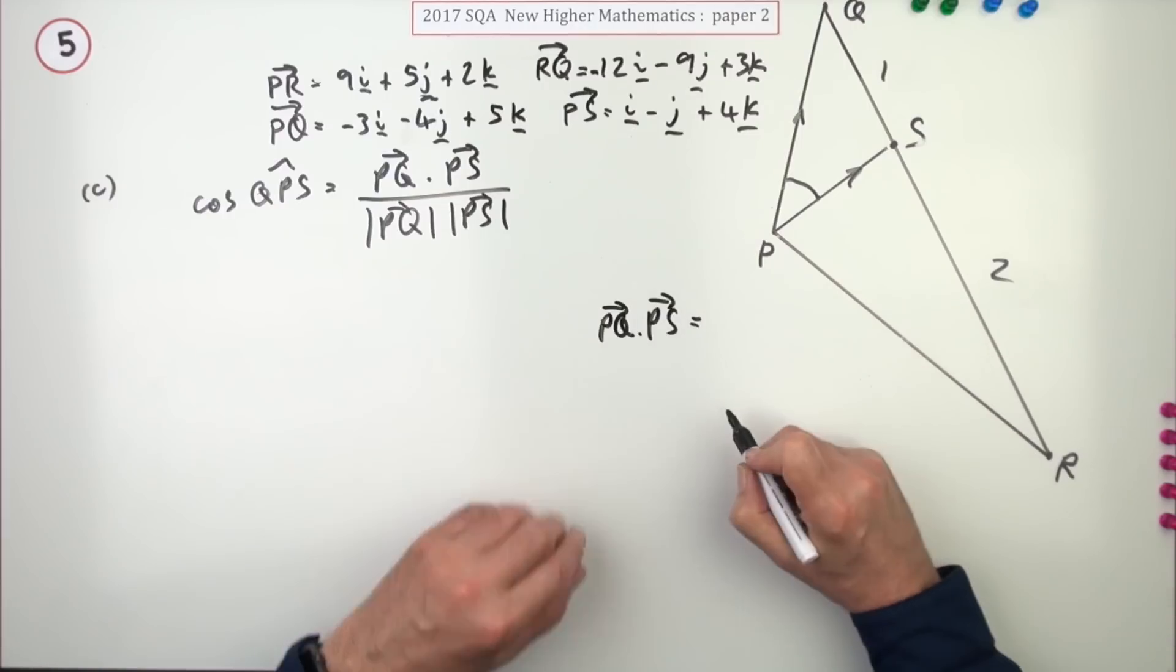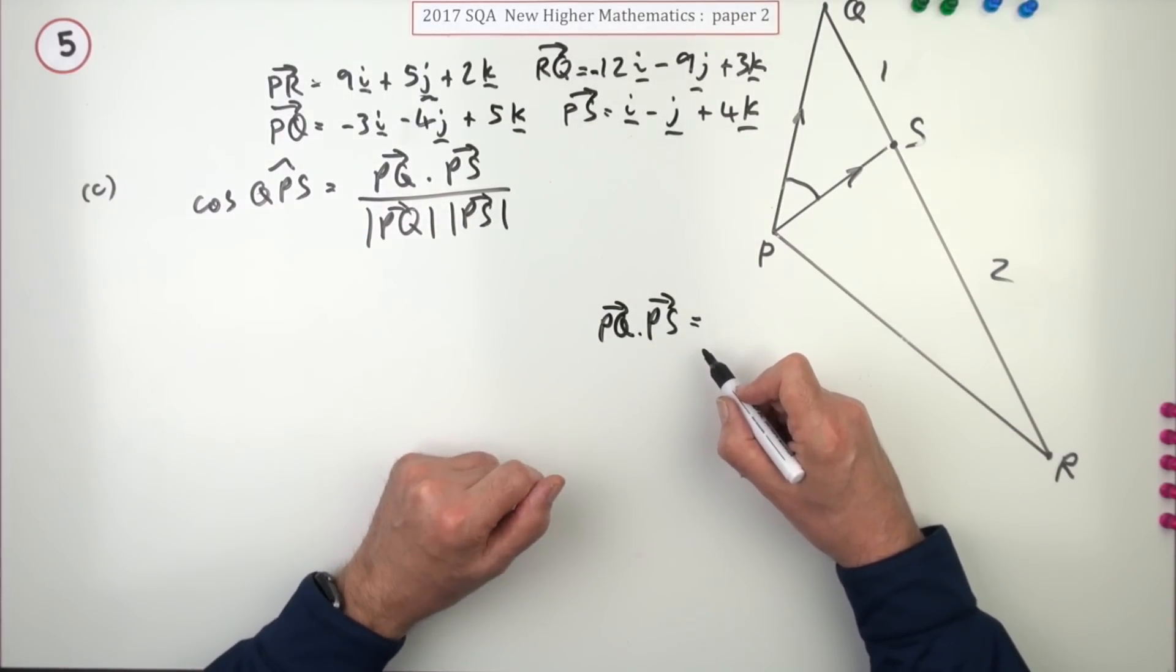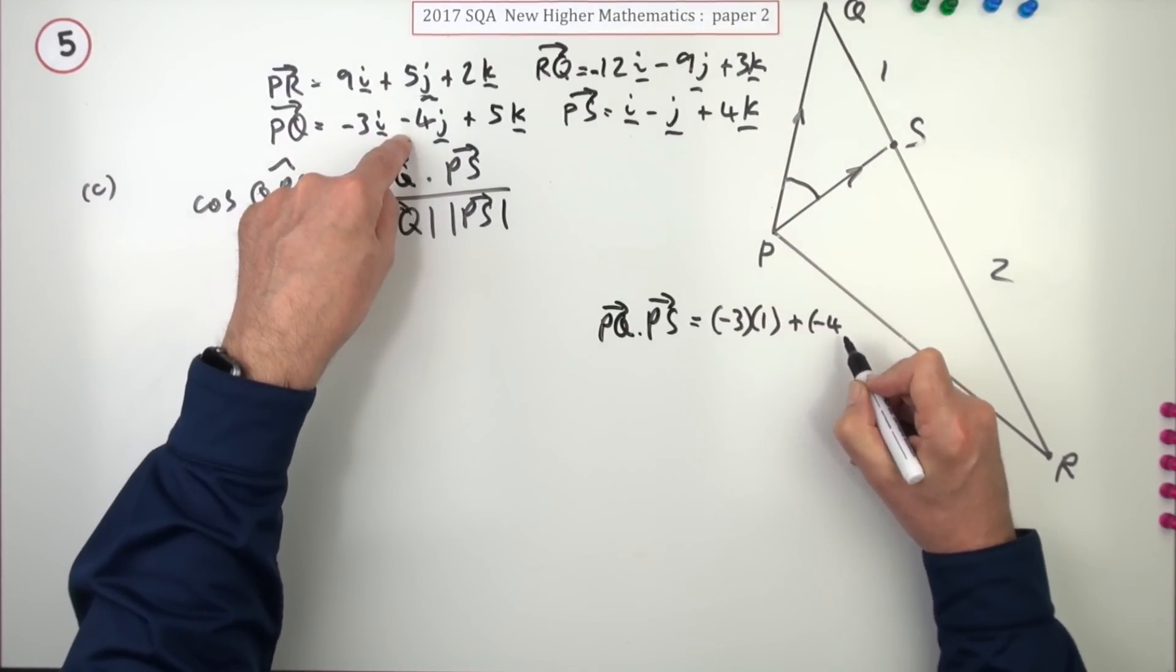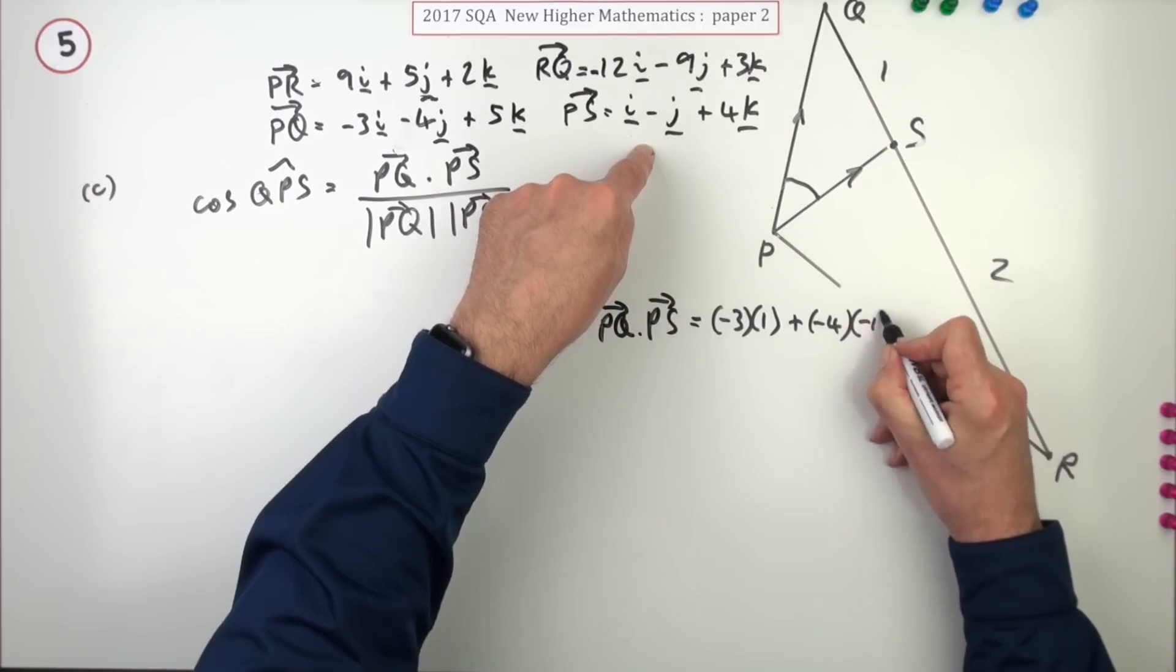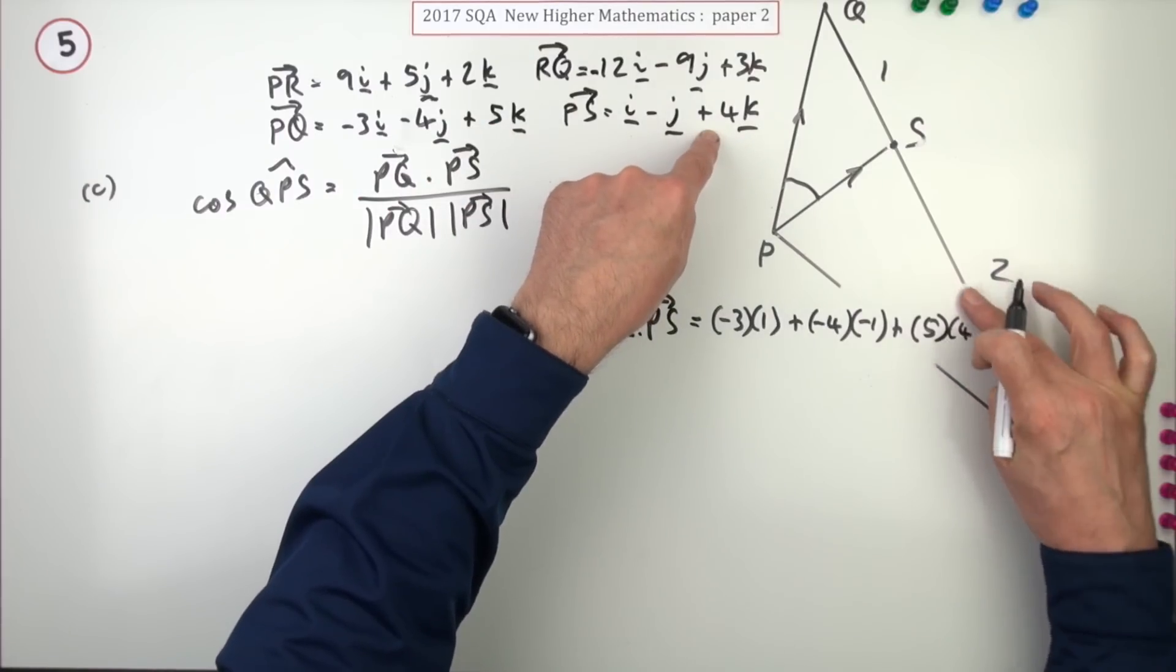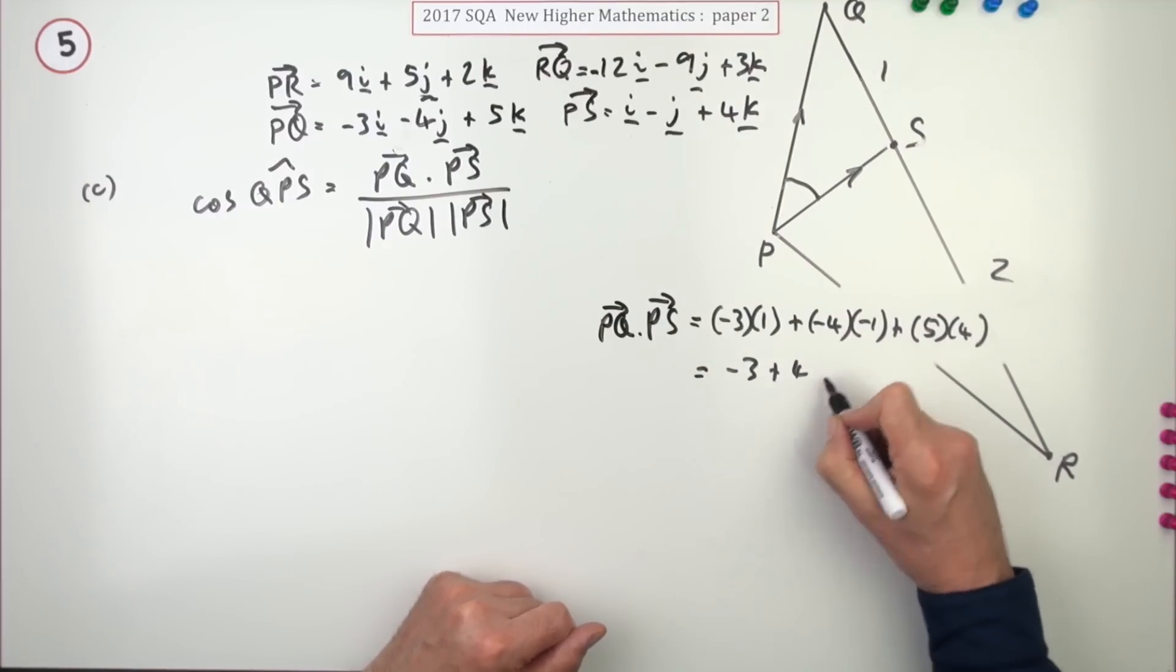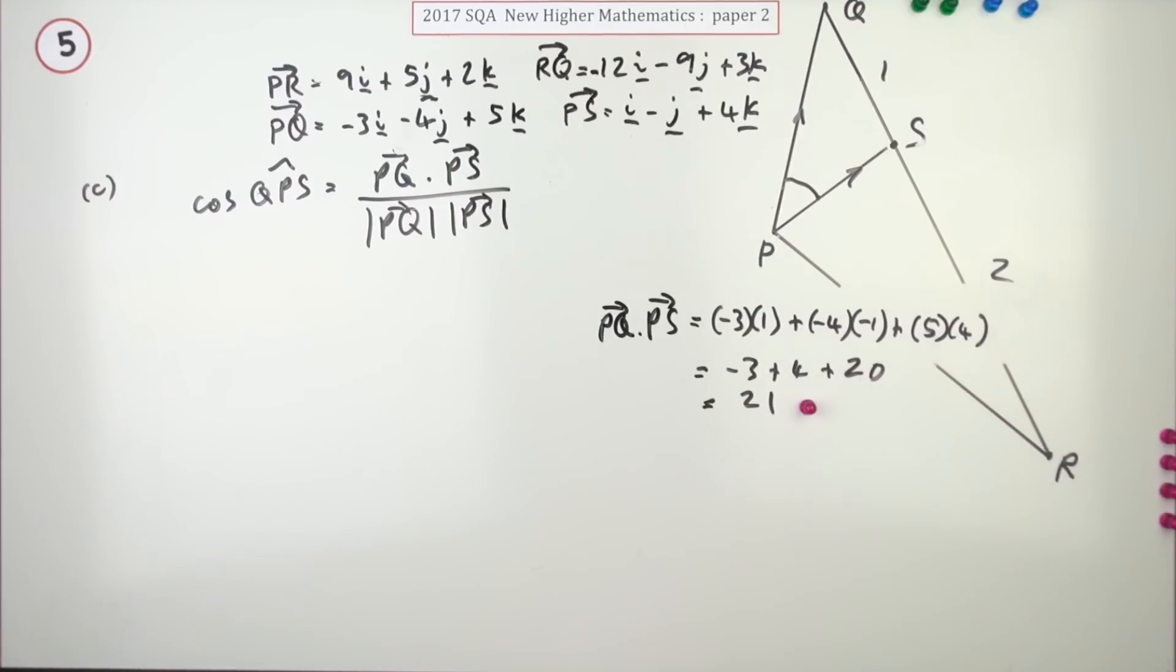PQ dot PS will equal, have I got enough room? They're here, they're here, side by side. They're in this form. But you can still see the numbers. Negative three times one. Plus, negative four times negative one. I'm just going to have to break through here. Plus, I'll just put them all in the brackets. It's five times four. Oh, and out the other side. So, the scalar product then is negative three plus four plus 20, which equals 21. Doing that gets a mark.